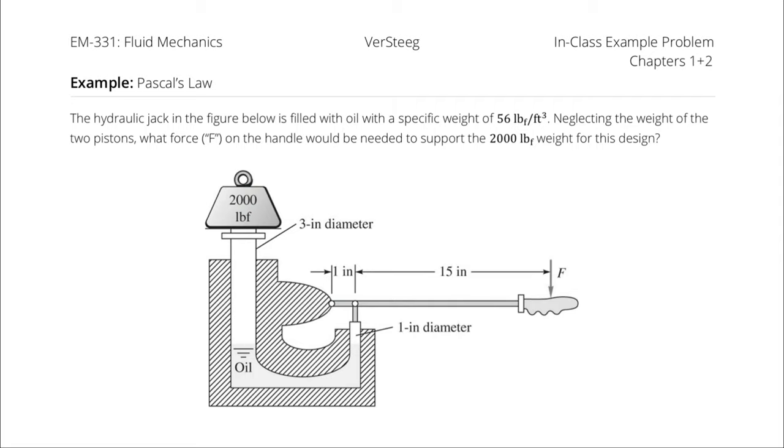The hydraulic jack in the figure below is filled with oil with a specific weight of 56 pounds of force per cubic foot. Neglecting the weight of the two pistons, what force on the handle would be needed to support the 2,000 pound weight for this design?